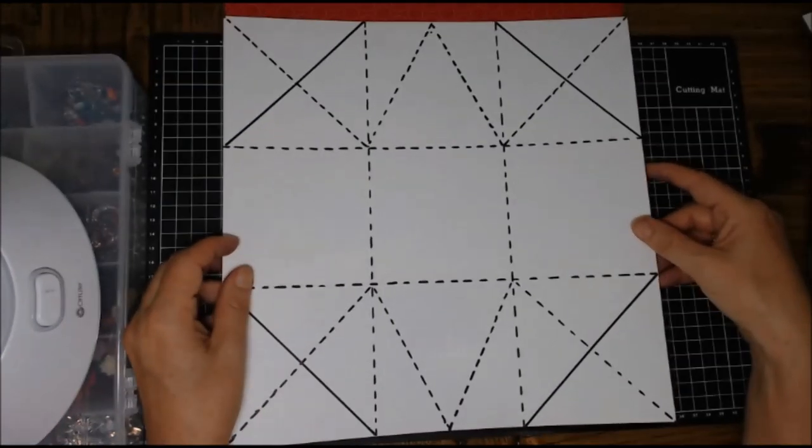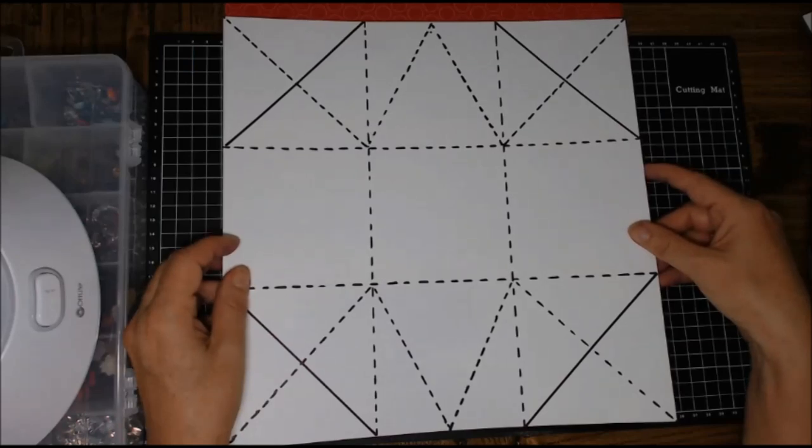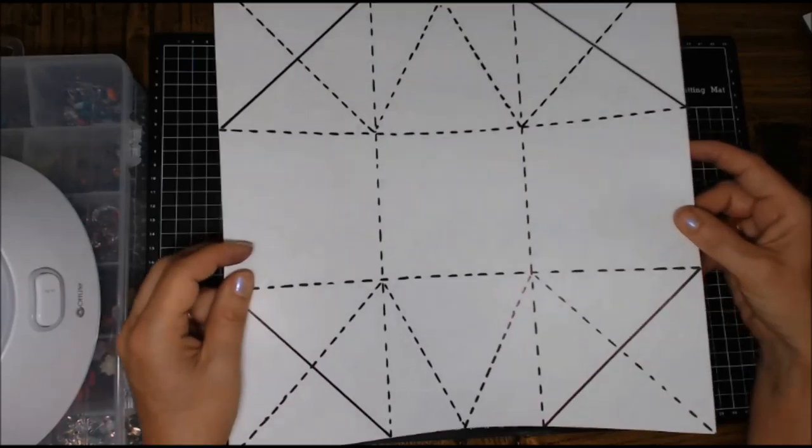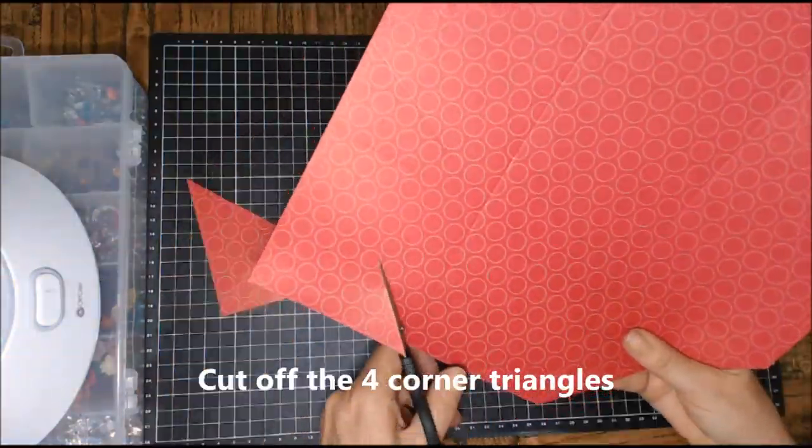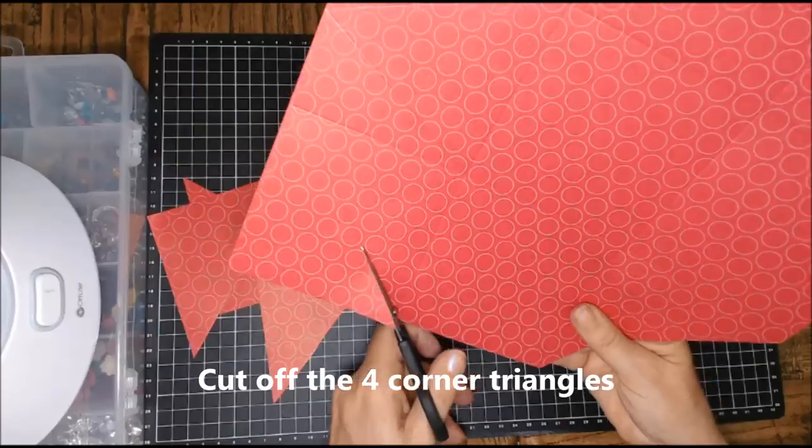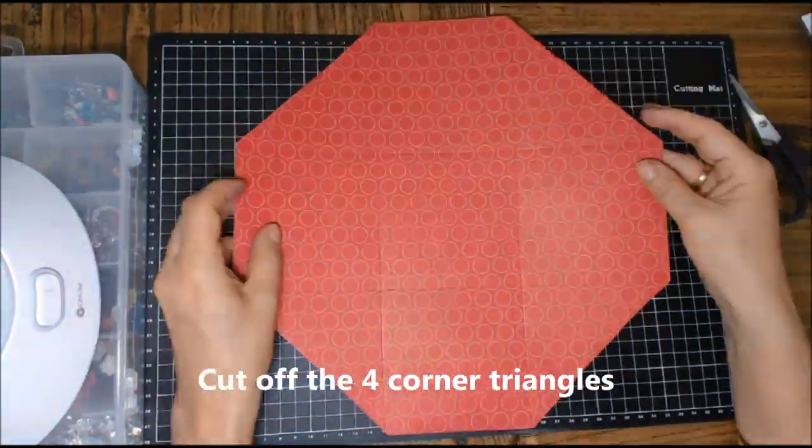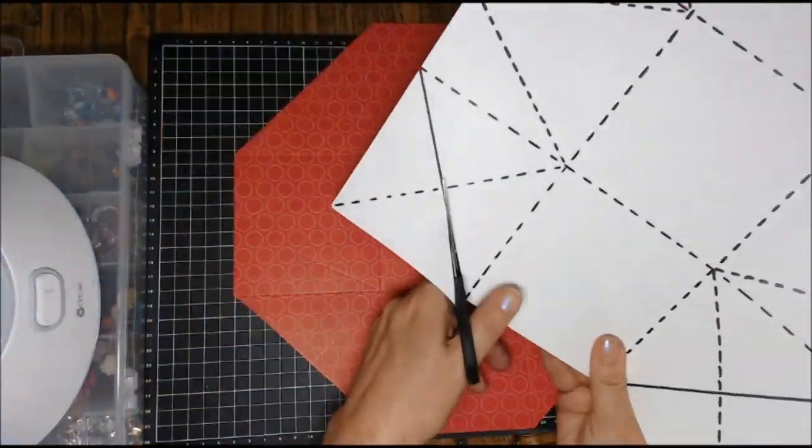Now I've drawn this on a template which makes it easier for you to see. You can see the fold lines and then there are four cut lines on each corner. So we're just going to cut out those four outside triangles and you want to save these pieces because we're going to be using one of those later on.